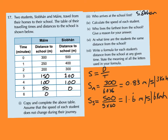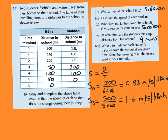Who lives the farthest from school? Obviously Siobhan lives the farthest because her distance at zero minutes is 500. At what time are the students the same distance from school? At four minutes. Now, write a formula for each student's distance from school at any given time — I'll get Myra's formula and Siobhan's formula from students.